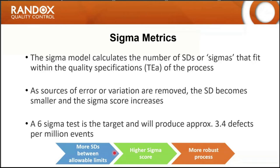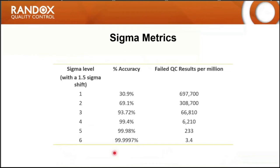The model works by calculating the number of standard deviations — the number of sigmas — that fit within the quality specifications of the process, based on total allowable error. As sources of error or variation are removed, the SD becomes smaller and the Sigma score increases. The more standard deviations you can fit within your process specifications, the higher the Sigma score and the better the performance. We're really aiming for a Sigma of 6 — a 6 Sigma test will produce approximately 3.4 defects per million events. A Sigma of 1 results in 697,700 failed QC results per million tests, and that number decreases as the Sigma score increases. Generally, anything above four is acceptable.